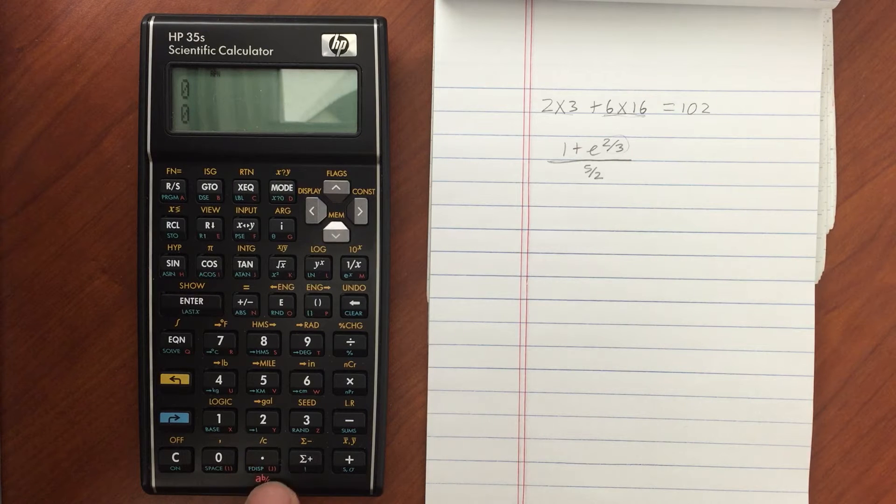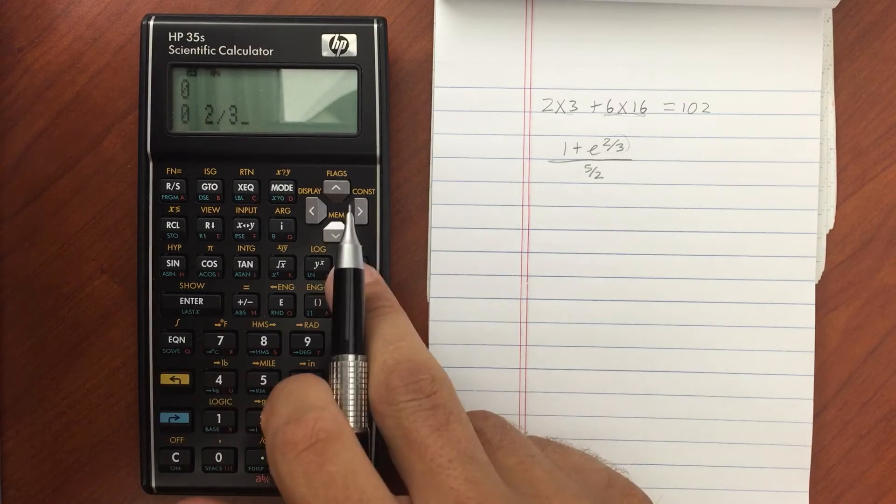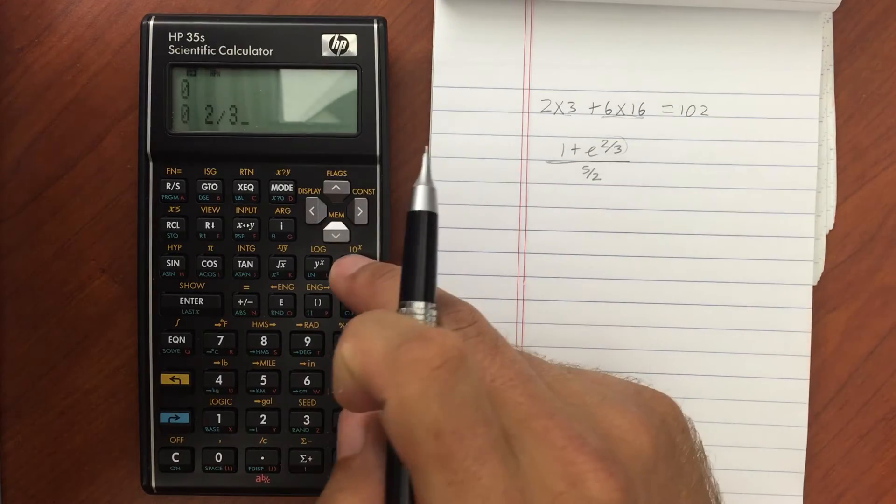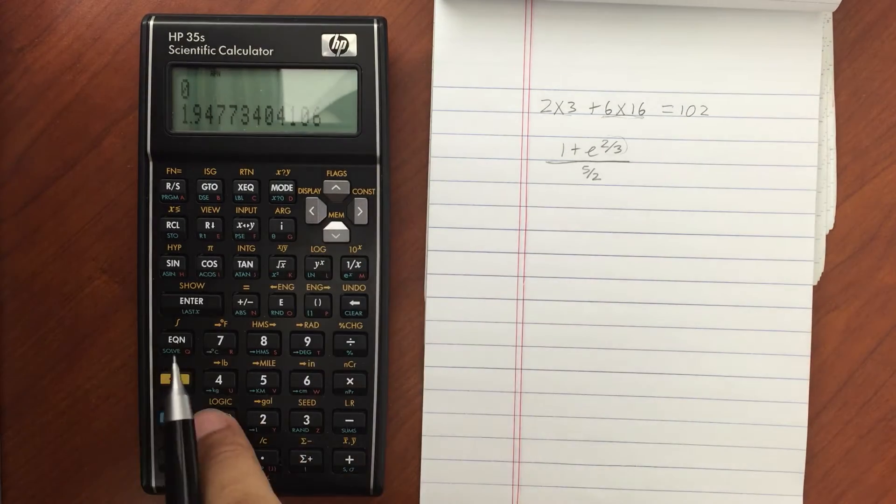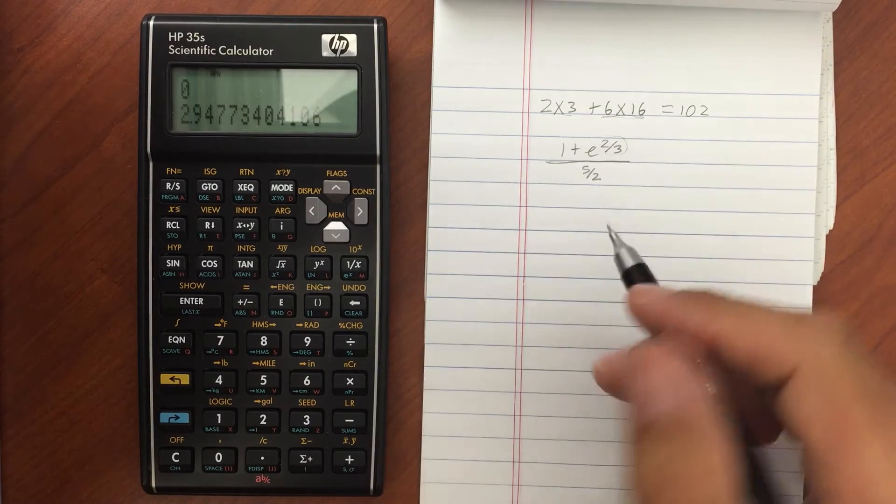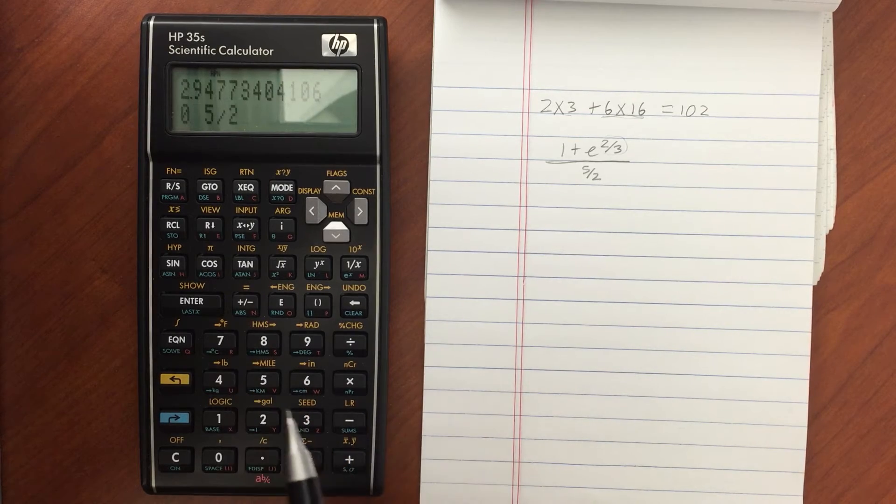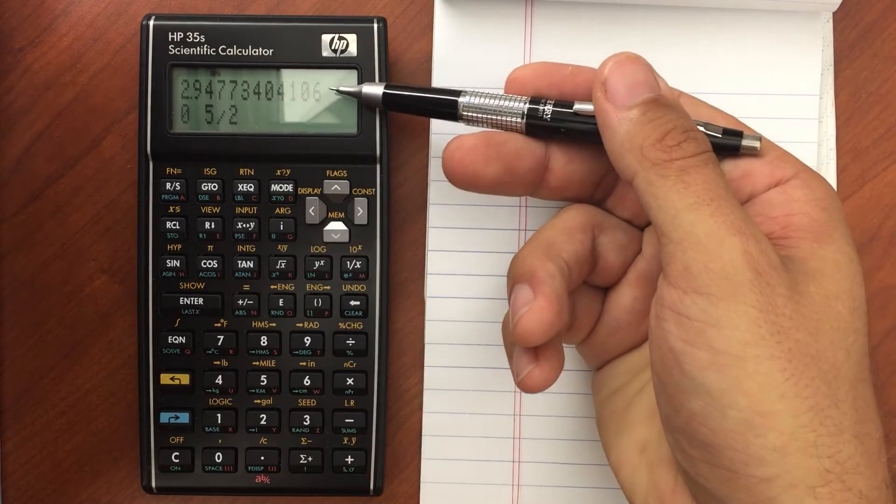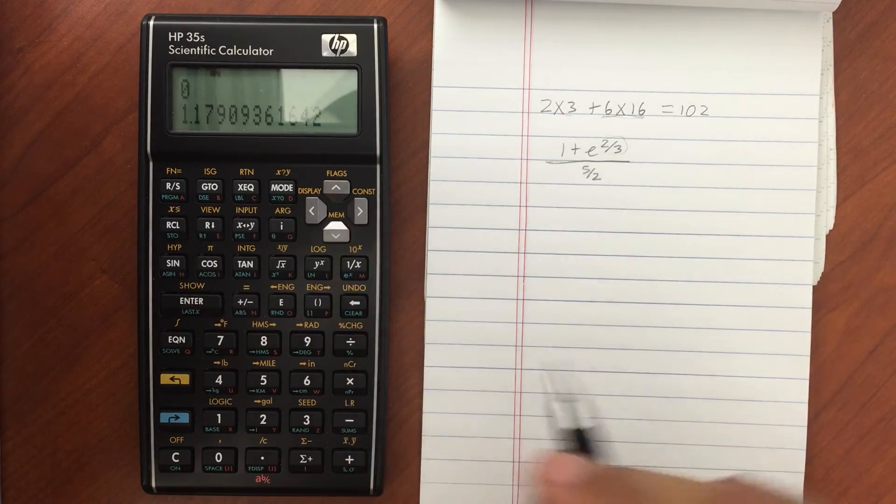So I'm going to do the decimal fraction. So 2 thirds. And I would raise e to that number. So blue shift e to the x. Then I'd add 1 to it. So I'd put in my 1. Hit plus. And I'd put in my 5 halves. And then divide that top amount up here by the bottom amount down there. And there's my answer.